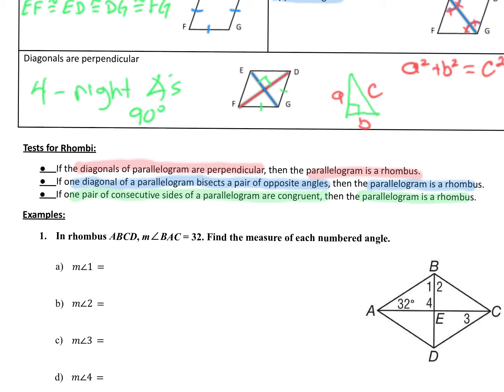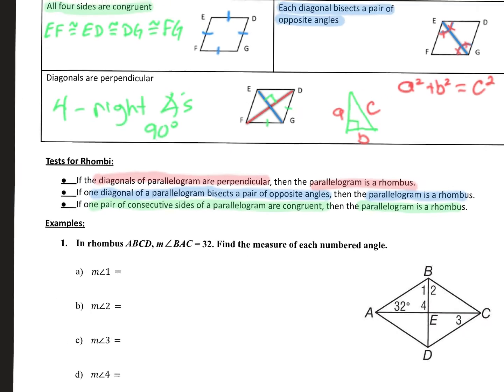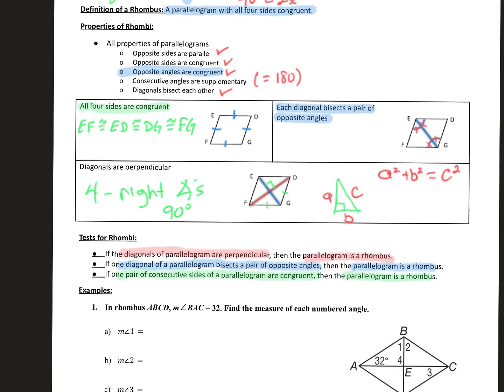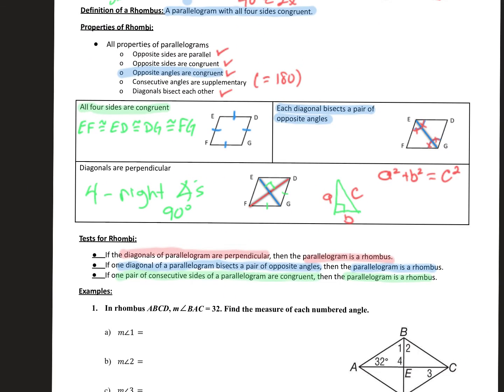To be clear: a rhombus has all the properties of parallelograms — opposite sides parallel, opposite sides congruent, opposite angles congruent, consecutive angles that add up to 180 degrees, and diagonals bisecting each other.